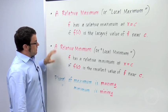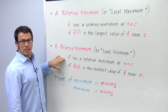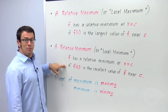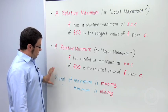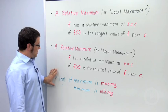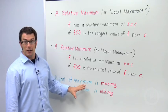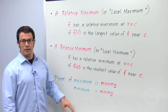And relative minimum, f has a relative minimum at x equals c if f of c is the smallest value of f near c. Now, important for you to know, because you might hear me use these terms in the videos, plural of maximum is maxima, plural of minimum is minima.